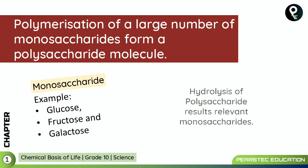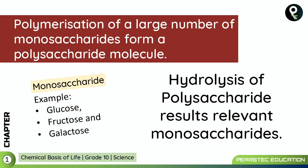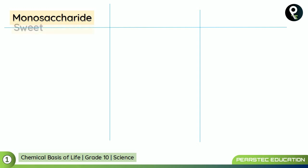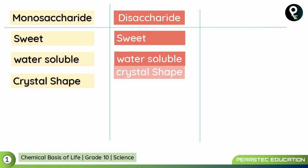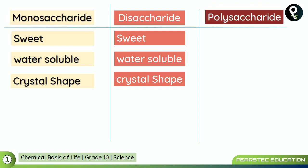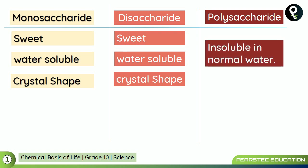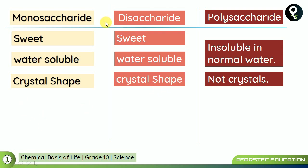Hydrolysis of polysaccharides results in the relevant monosaccharides — you can break down polysaccharides and form monosaccharides. We already learned that monosaccharides are sweet, water soluble, and crystal in shape, and disaccharides are also sweet, water soluble, and crystal in shape. Polysaccharides, however, are insoluble in normal water and not crystal like disaccharides or monosaccharides.